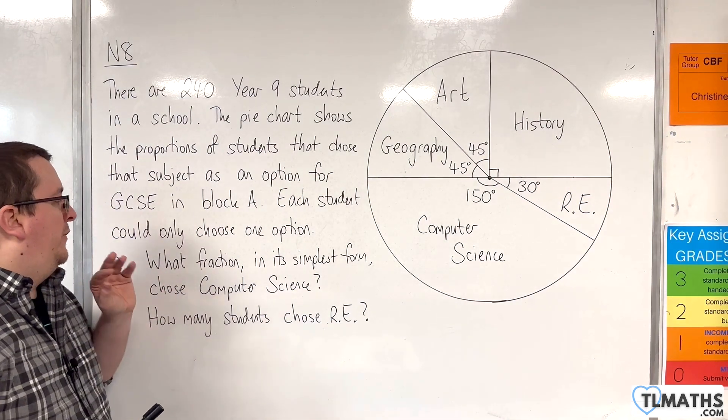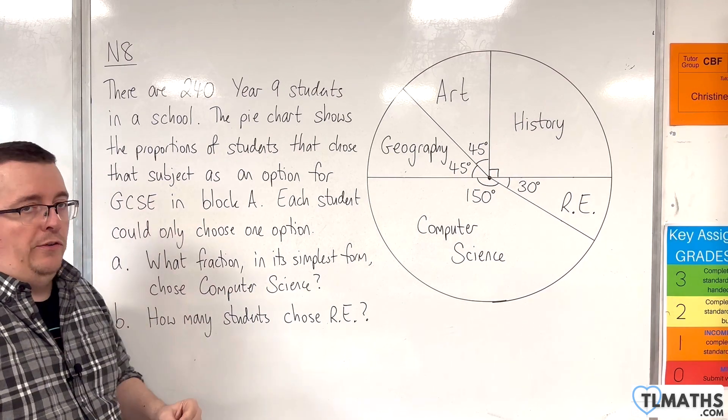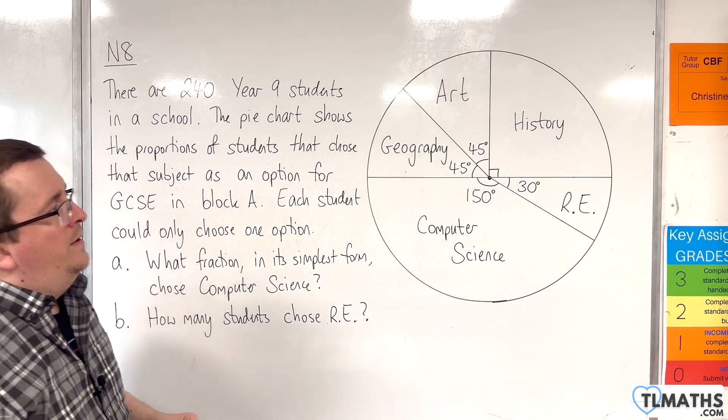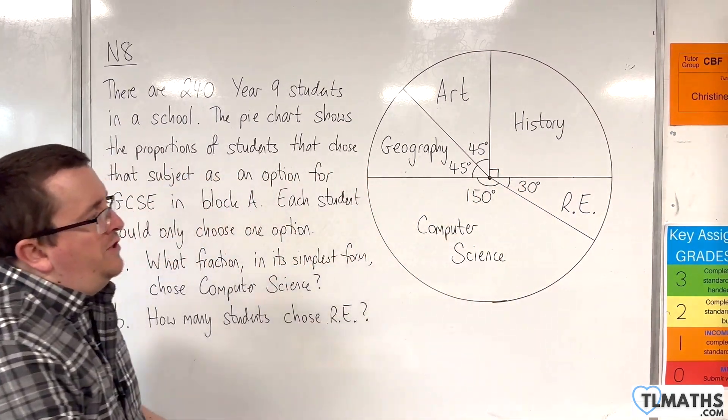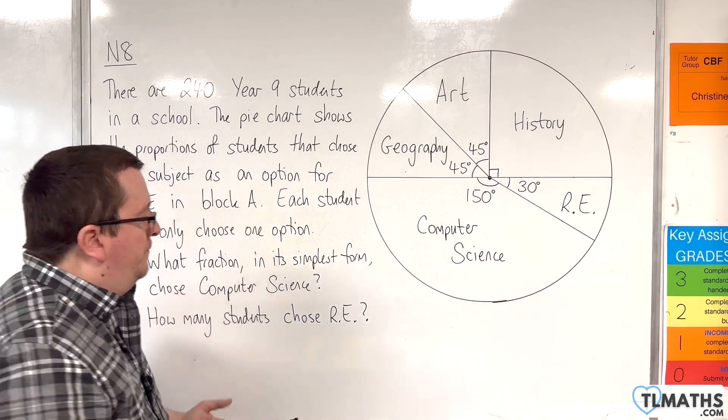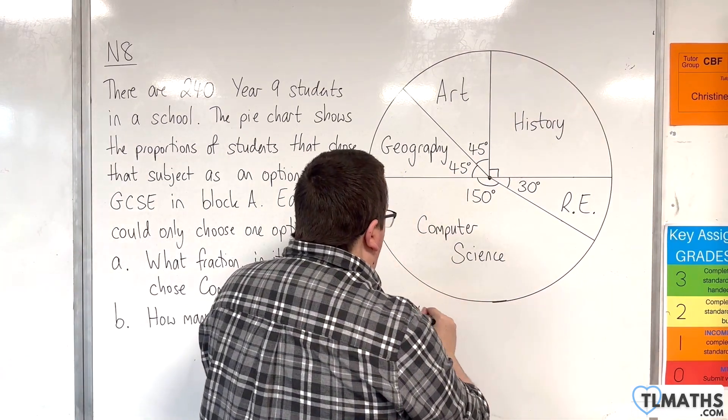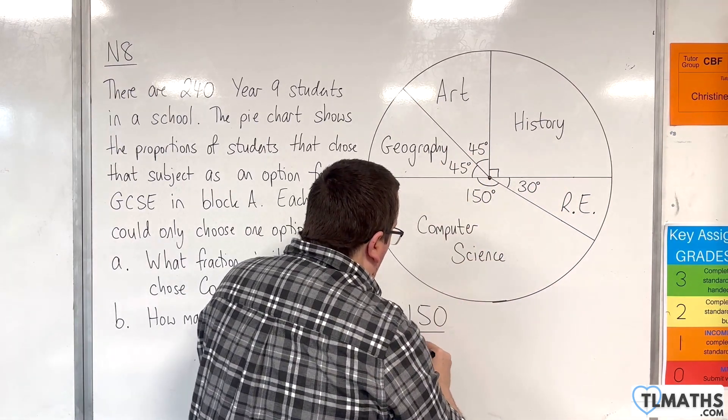Part A is asking what fraction in its simplest form chose computer science. We can see the degrees that are set up for each of the regions. We have 150 degrees for computer science and that's 150 out of the 360 degrees all the way around.